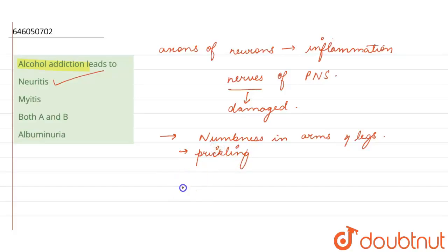Prickling sensations, impaired speech, memory loss, vomiting, nausea, heat tolerance, and dizziness are other symptoms as well. Myitis is the inflammation of muscles.